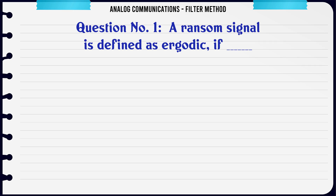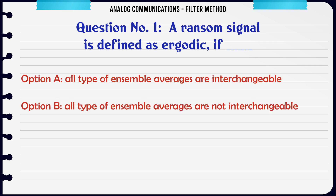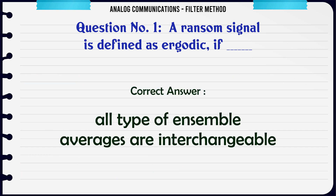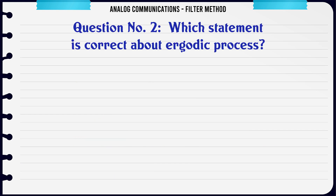A random signal is defined as ergodic if: a) All types of ensemble averages are interchangeable. b) All types of ensemble averages are not interchangeable. c) All types of ensemble averages are constant. d) All types of ensemble averages are double their previous value. The correct answer is: All types of ensemble averages are interchangeable.